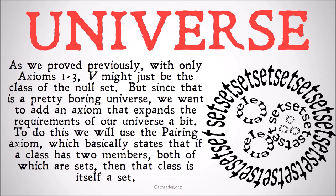As we proved previously, with only axioms 1 through 3, V (the universe) might just be the class of the null set. But since that was a pretty boring universe, we might want to add an axiom that expands the requirements of our universe a bit. Note that with 1 through 3, there's a wide range of different classes which could be the universe, but we haven't put enough requirements on it to actually nail it down to what the universal class is.